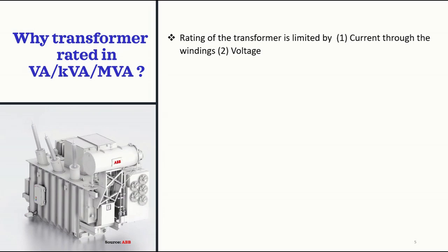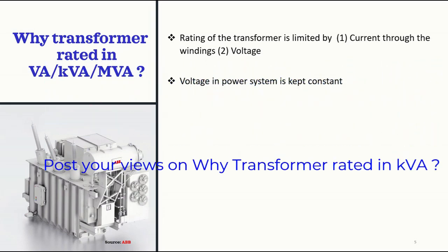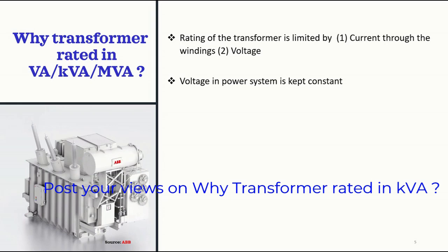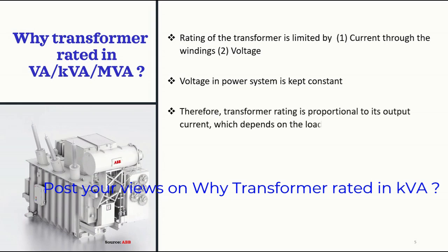In general, the voltage in the power system is kept constant within the specified range. Therefore, the transformer voltage and the turns ratio are normally fixed. So what is variable? Basically, the rating of the transformer is directly proportional to the current that it delivers to the load.